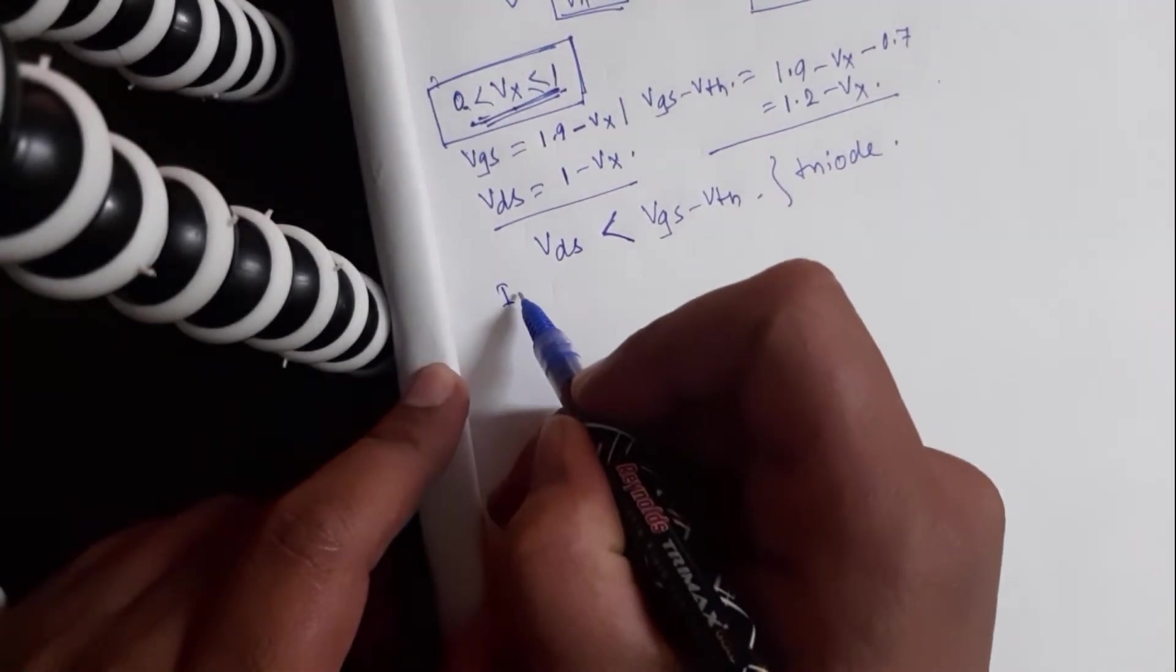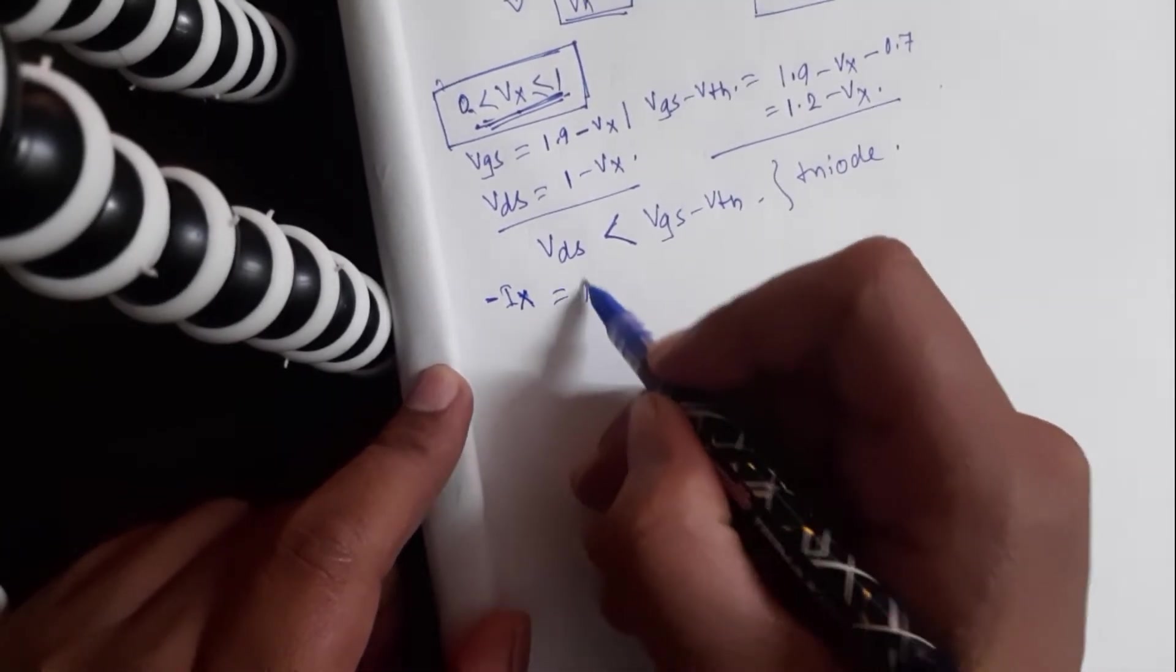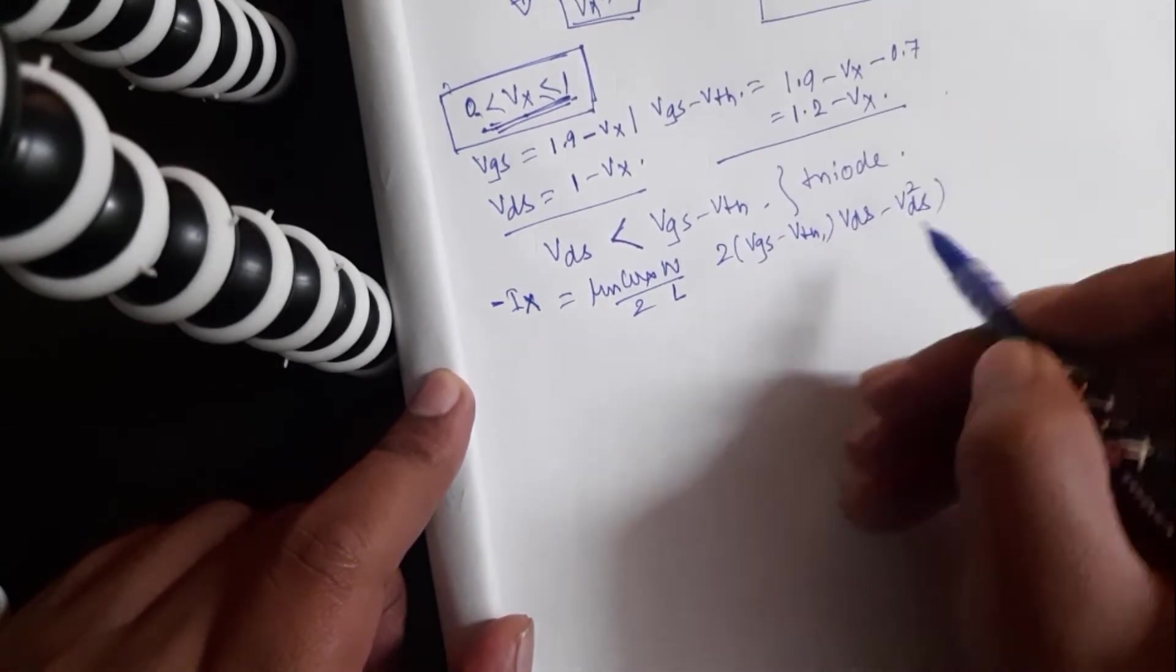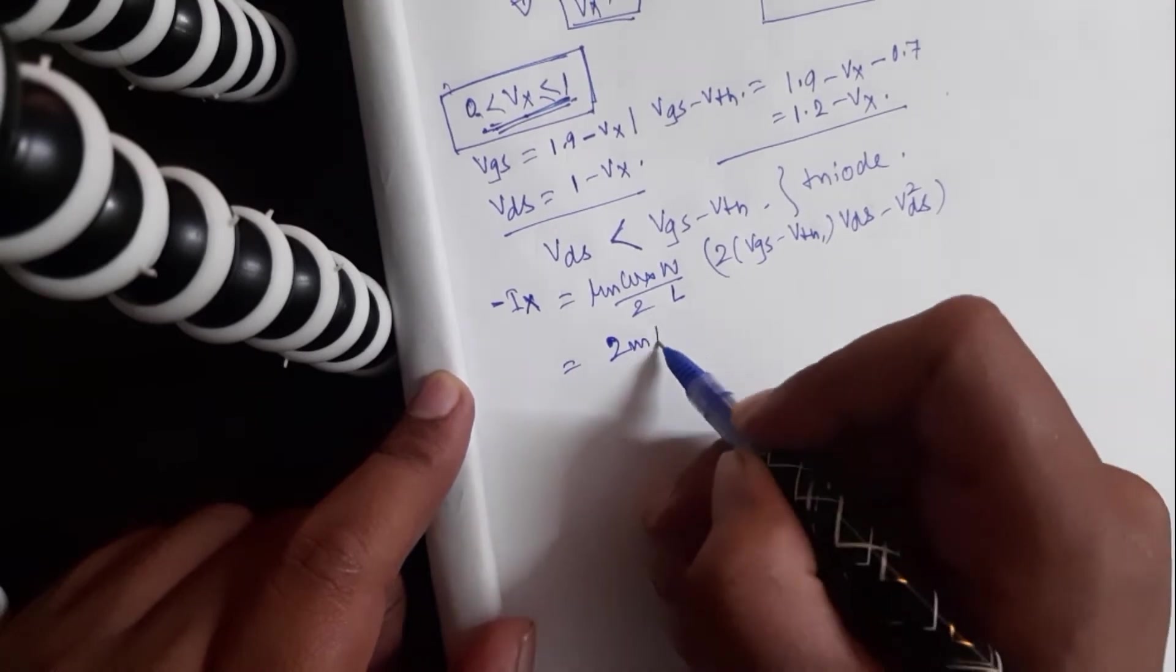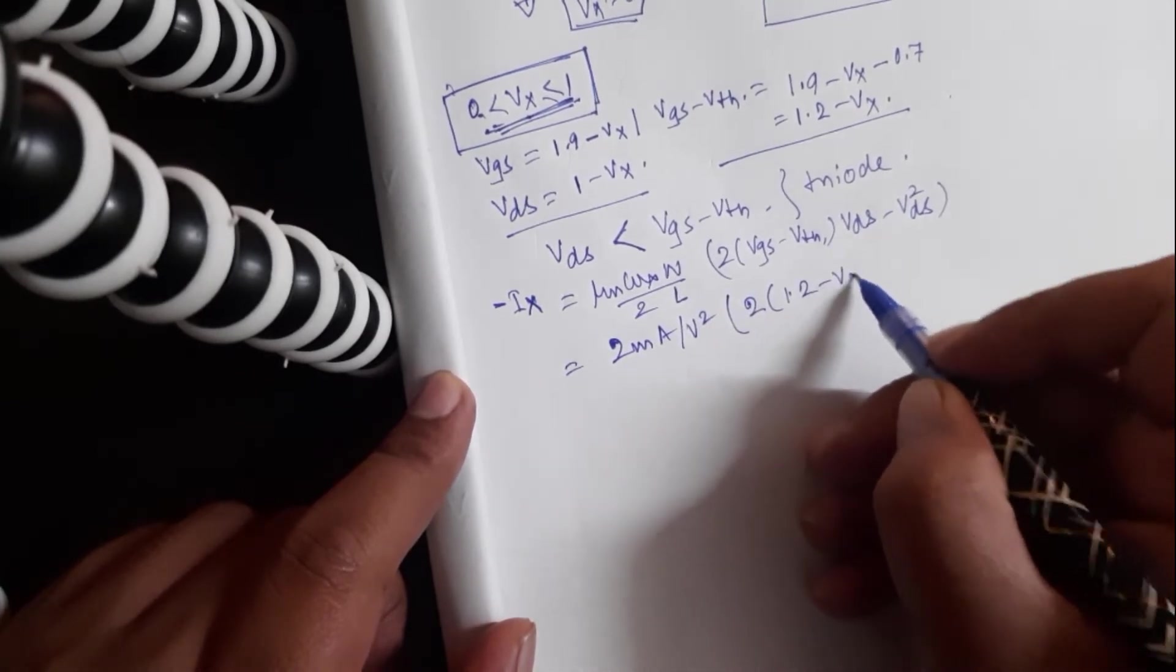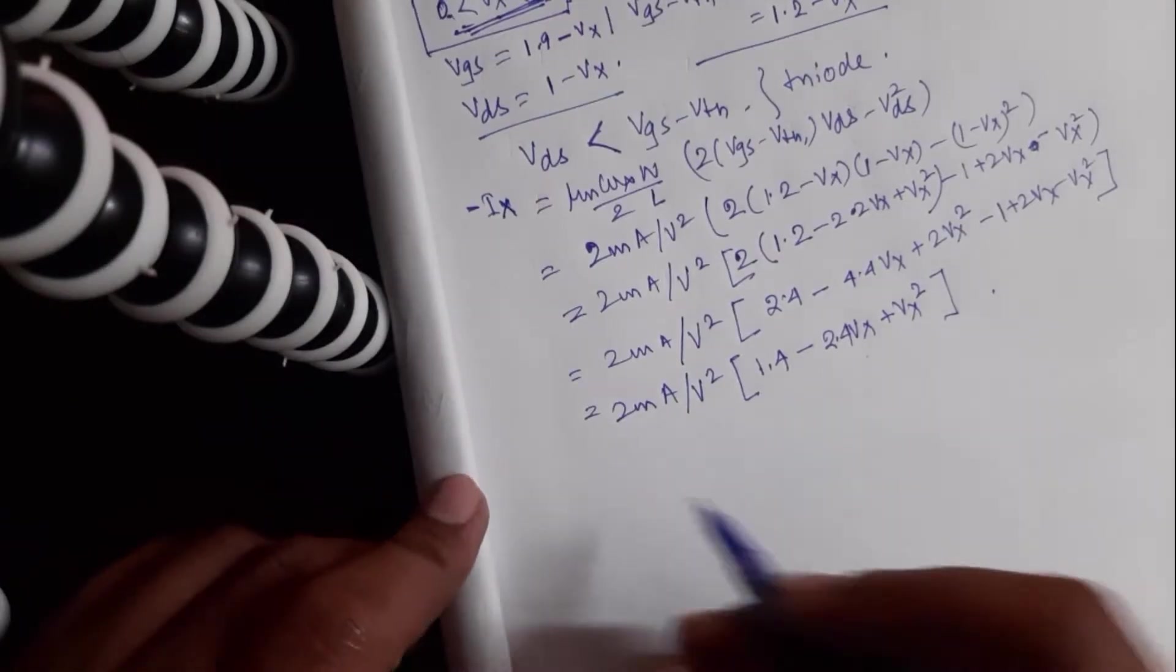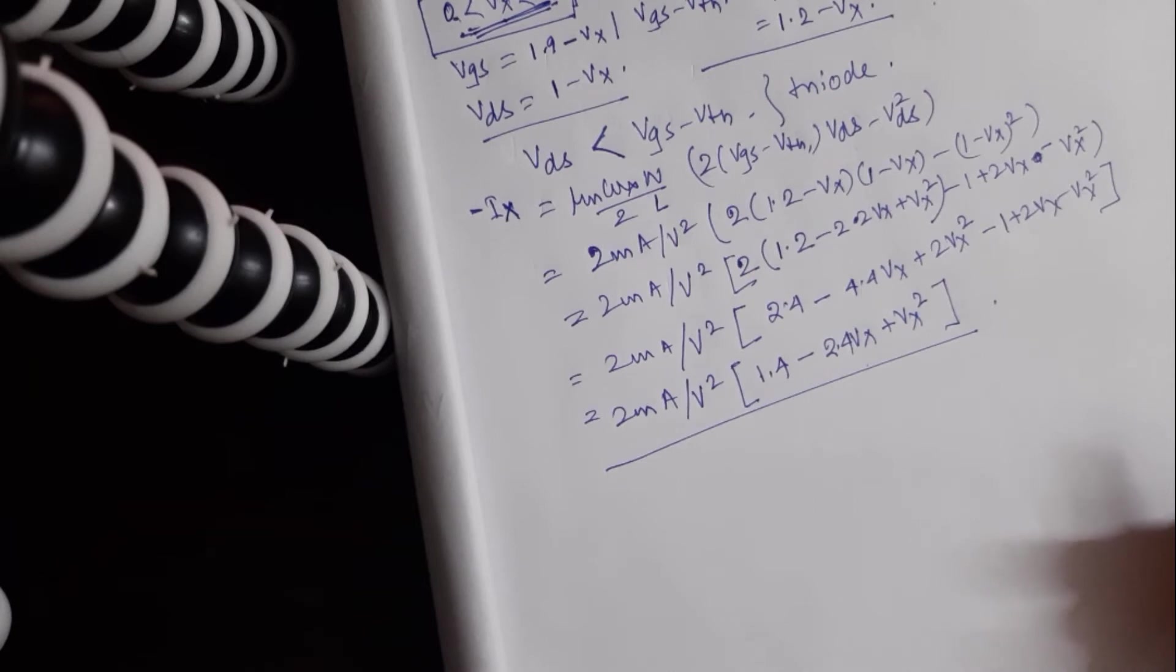Then what should be the current? Then Ix, or rather minus Ix, should be mu n Cox W by 2L, 2 times Vgs minus Vth, Vds minus Vds square. It should be around 2 milliamperes per volt square here, 2 times Vgs minus Vth, which is 1.2 minus Vx, times Vds, which is 1 minus Vx, minus 1 minus Vx, whole square.